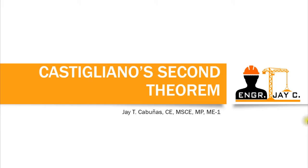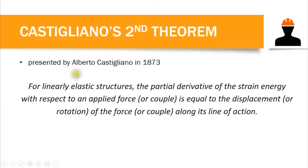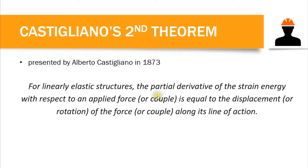Castigliano's Second Theorem was presented by Alberto Castigliano in 1873. It states that for linearly elastic structures, the partial derivative of the strain energy with respect to an applied force or couple is equal to the displacement or rotation along its line of action. For deflection, we integrate the partial derivative of the moment equation with respect to P, times the moment equation, over the flexural rigidity EI, from 0 to L. For rotation, we use the partial derivative of M with respect to the couple M-bar, similarly integrated.